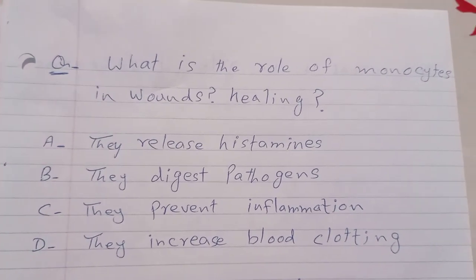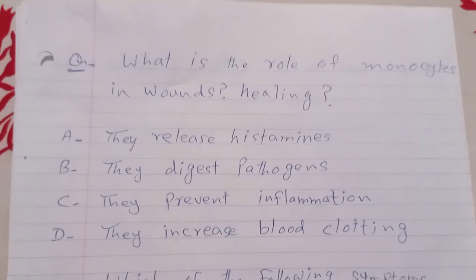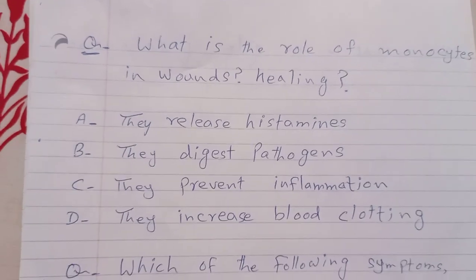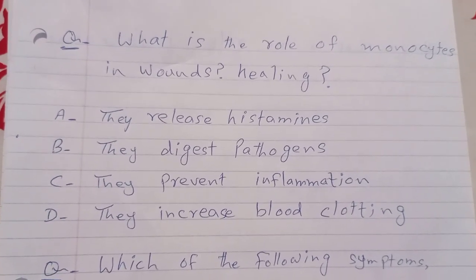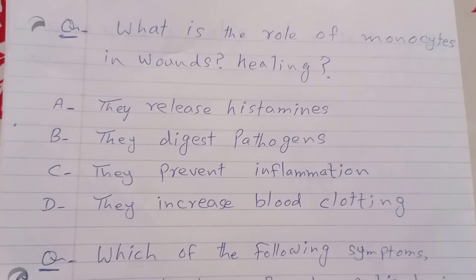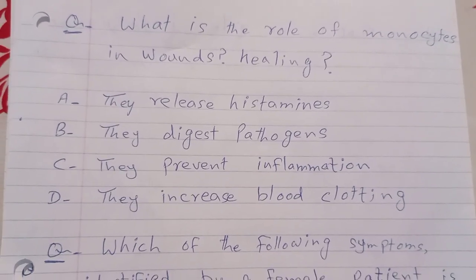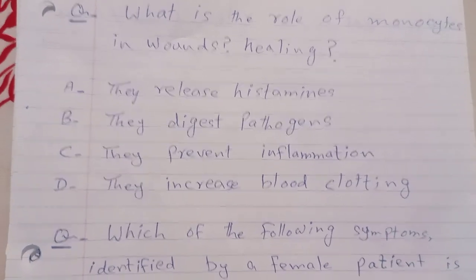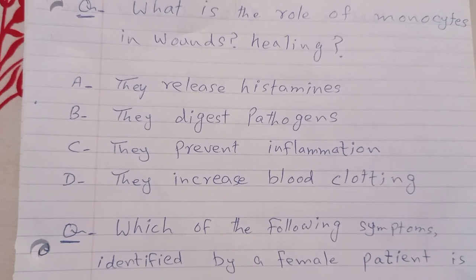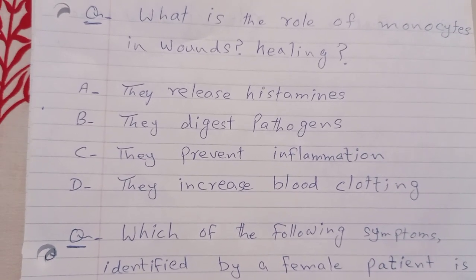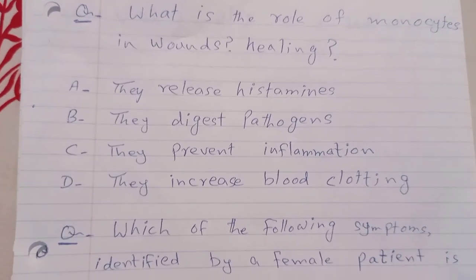What is the role of monocytes in wound healing? A. They release histamines. B. They digest pathogens. C. They prevent inflammation. D. They increase blood clotting. The answer is B: they digest pathogens.